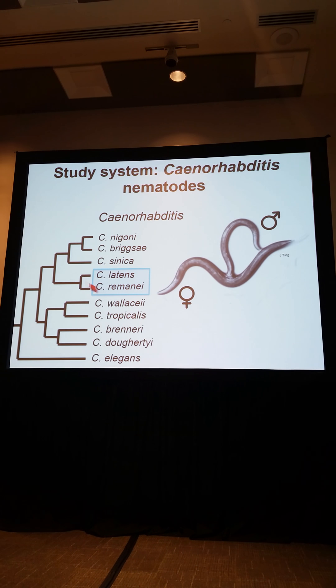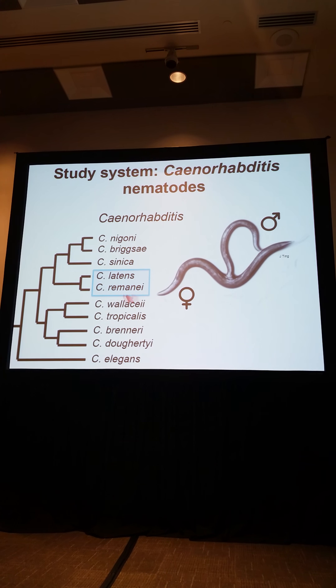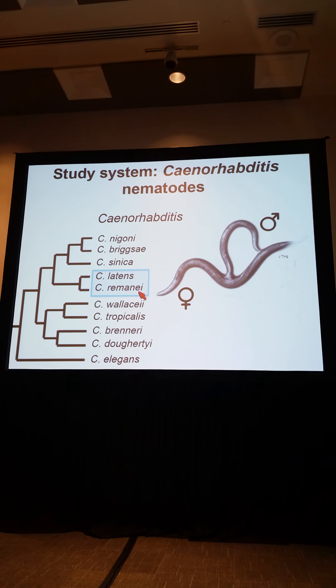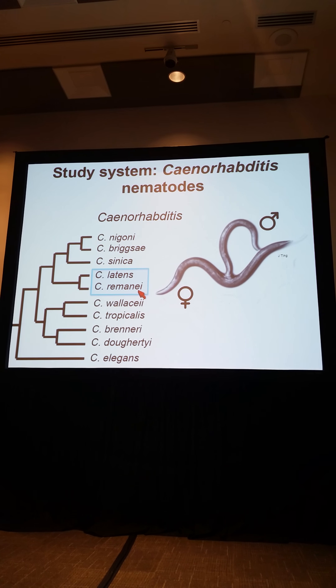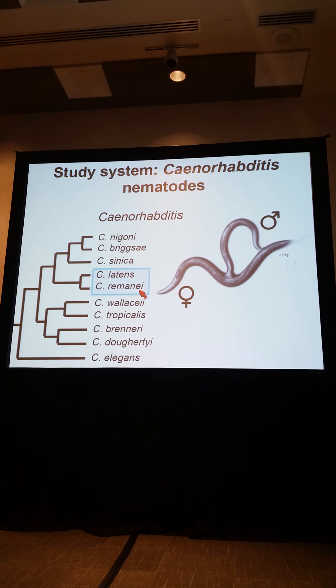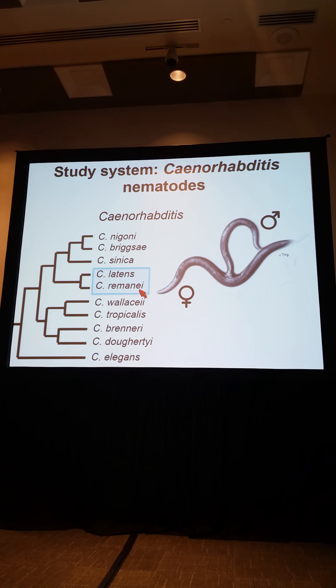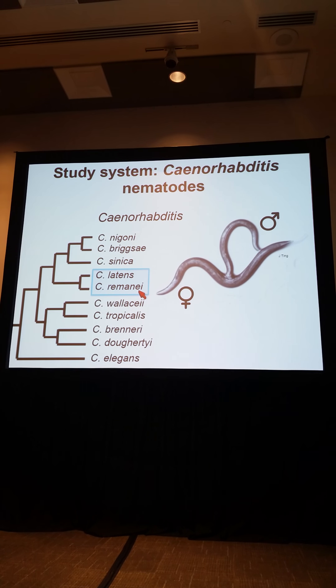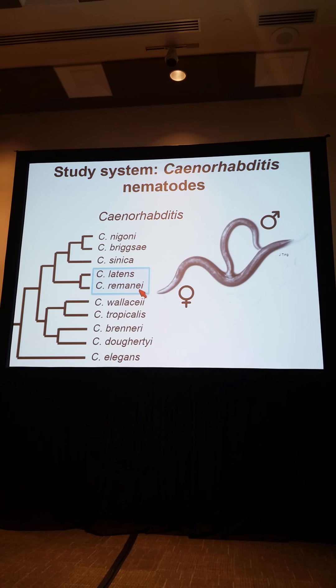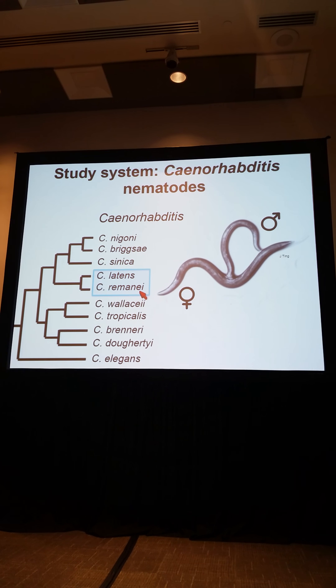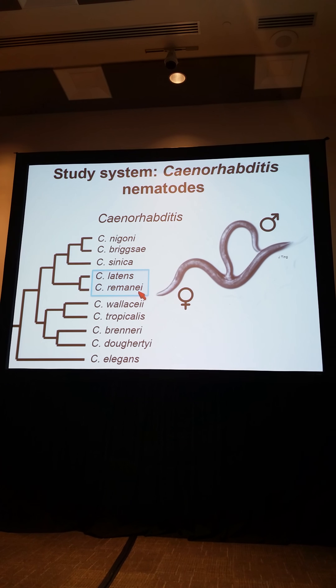I've been looking at the pair C. latens and C. remanei, which are unique in the genus. There are only a couple of species pairs that are actually able to produce viable hybrid offspring, which we need in order to study intrinsic reproductive isolation experimentally.